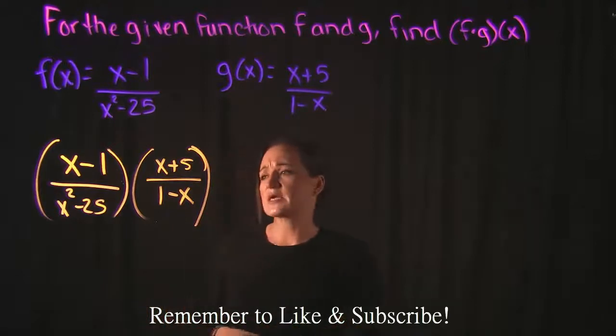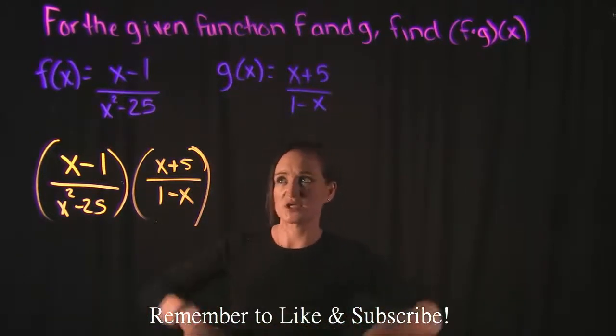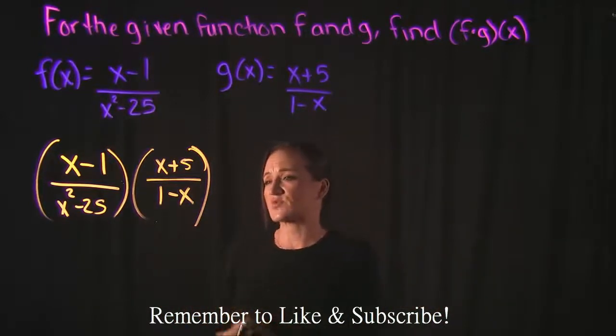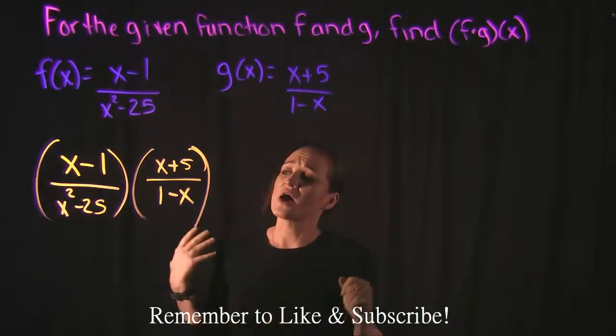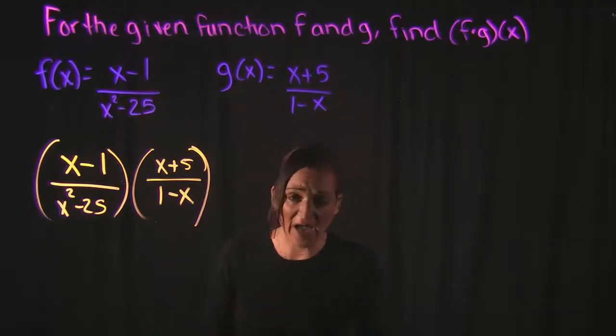So essentially, what we're doing is we're multiplying rational expressions together. Rational expressions are just fractions that are in polynomial form. So that's what we have going on here. When we multiply rational expressions together, we do want to first make sure that our rational expressions are simplified, which means that they are factored.